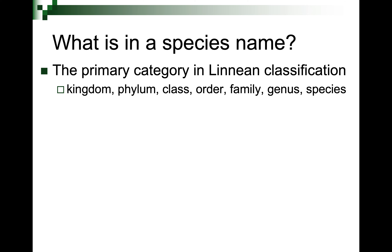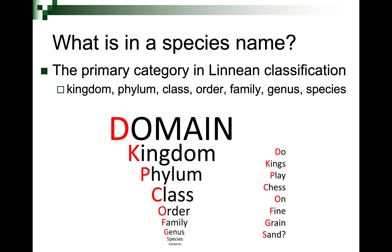So what's in a species name? The primary category in the Linnaean classification scheme is a species, but before you get to species, you have all the other classification ranks: domain, kingdom, phylum, class, order, family, genus, species, and in some cases even subspecies — though only the official ranks are recognized. To remember the order, use the mnemonic 'the king's play chess on fine grain sand' or similar phrases — whatever helps you remember these different ranks.